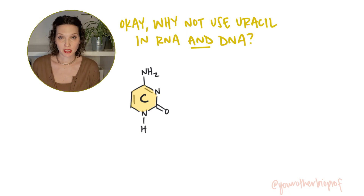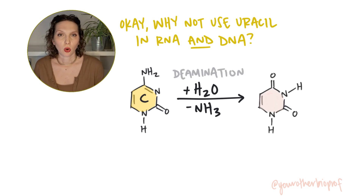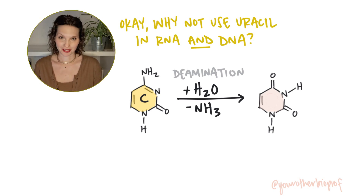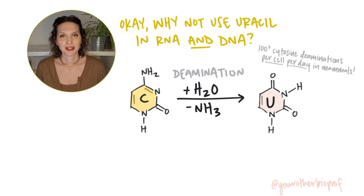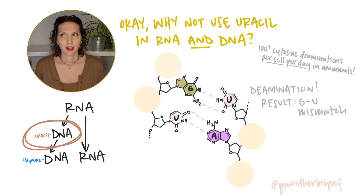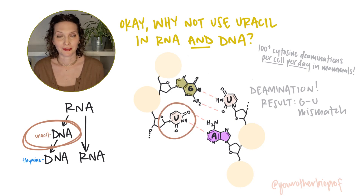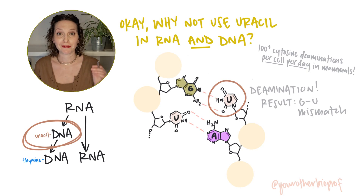Cytosines have a tendency to mutate. They lose their amino group, the NH2. This is called deamination, and it can happen spontaneously or in the presence of chemical mutagens like nitrous acid. What happens when a cytosine is deaminated? It looks like uracil — it is uracil. This type of mutation happens enough that your cells have special repair mechanisms just for dealing with it. The problem is that they're not great at telling the difference between a uracil that was always a uracil and a uracil that is the result of a cytosine deamination, one that should be fixed.